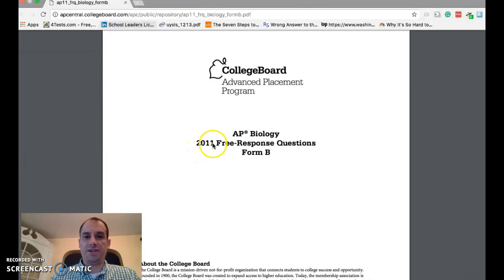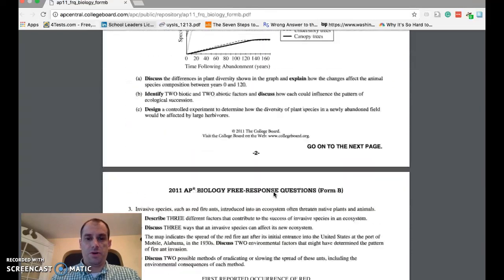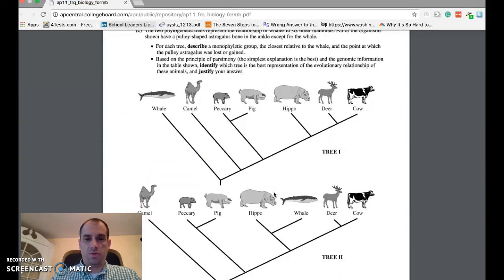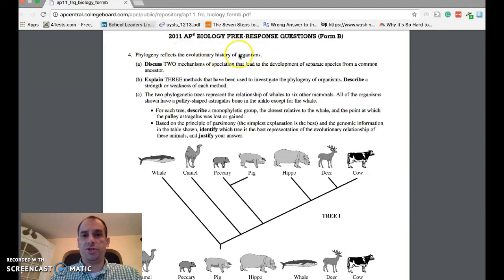This is a 2011 free response question. Let's go down to number four. Phylogeny reflects the evolutionary history of organisms. Discuss two mechanisms of speciation that lead to the development of separate species from a common ancestor. Explain three methods that have been used to investigate the phylogeny of any organism. Describe a strength and a weakness of each method.